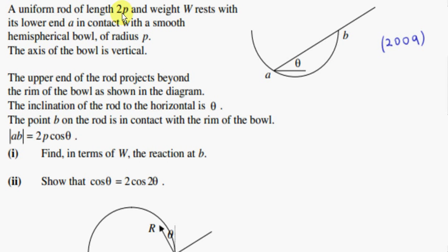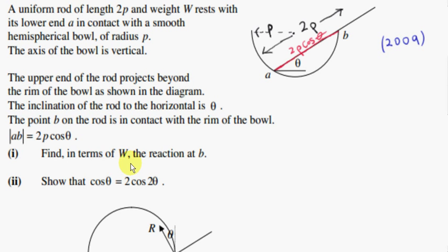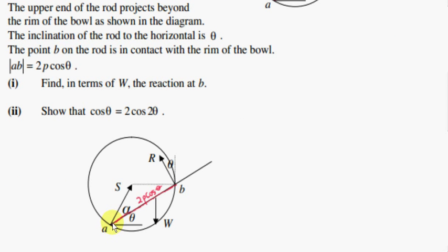A uniform rod of length 2P and weight W rests with its lower end A in contact with a smooth hemispherical bowl of radius P. The axis of the bowl is vertical. The upper end of the rod projects beyond the rim of the bowl. Point B on the rod is in contact with the rim of the bowl, and the distance between A and B is 2P cos theta. Find in terms of W the reaction at B. We have three forces acting on this rod. We have the weight of the rod at its midpoint, since it's a uniform rod — we treat the rod as a particle of weight W at that point.